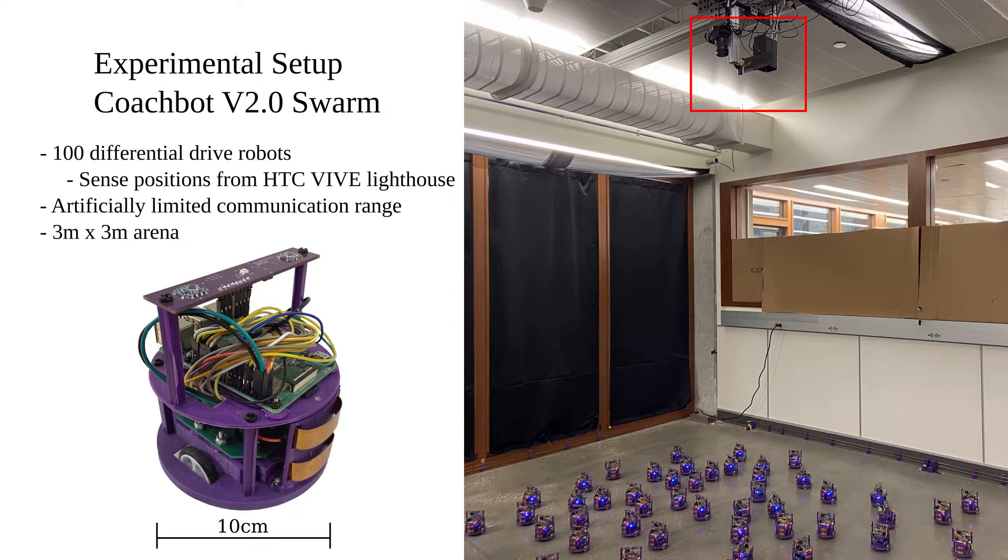Each robot senses its position using time-varying infrared signals from a ceiling-mounted HTC Vive lighthouse and communicates with neighbors via Wi-Fi. This communication range can be artificially limited.